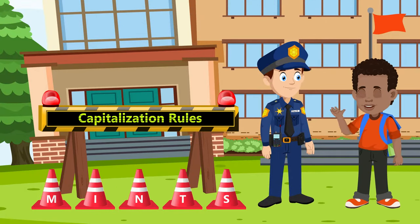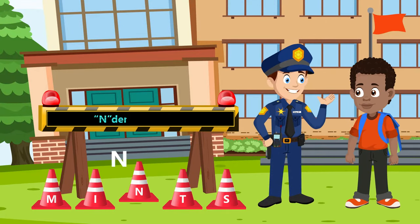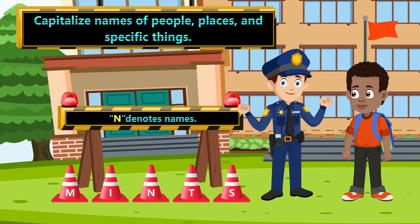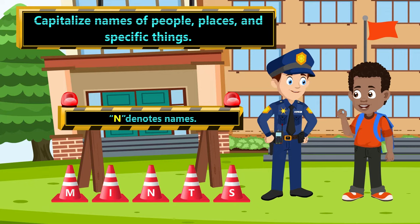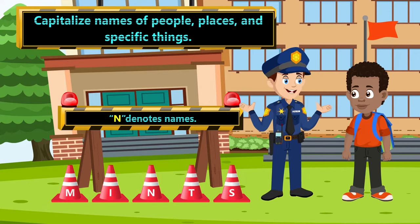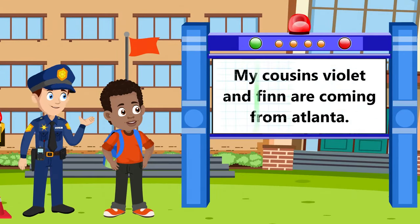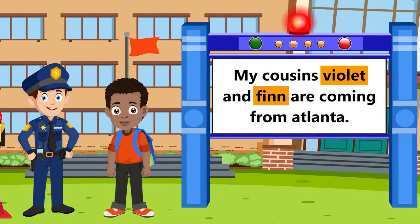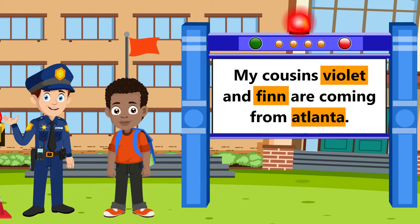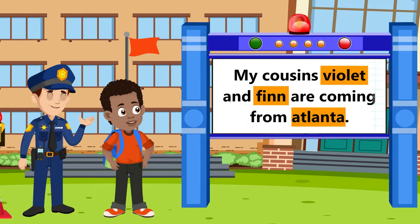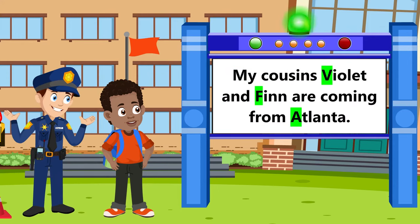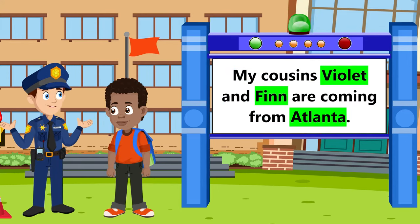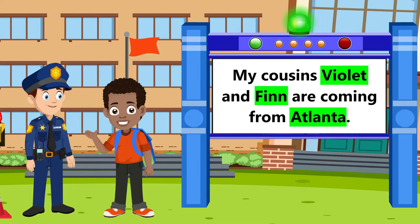The next letter is N. What does it stand for? N denotes names. Capitalize names of people, places, and specific things. That's rule number three. Let's take this sentence for example: My cousins Violet and Finn are coming from Atlanta. Violet and Finn are names of people, and Atlanta is the name of a place. We need to capitalize these words. Our new sentence will look like: My cousins Violet and Finn are coming from Atlanta. That's one more simple rule I can remember.